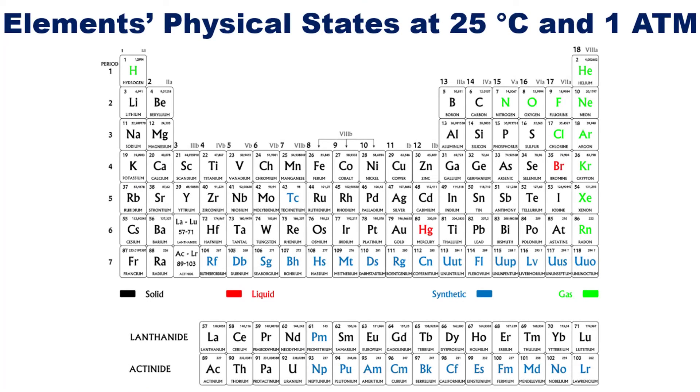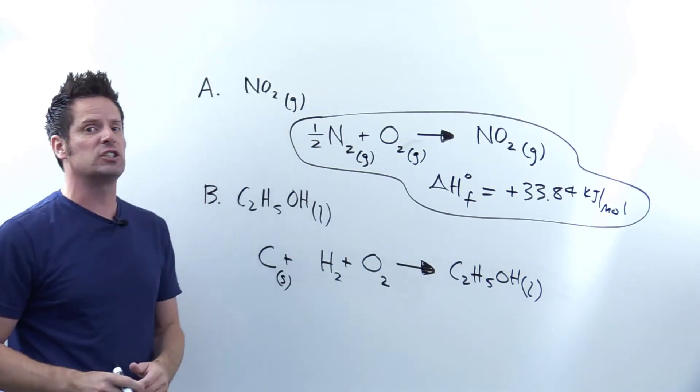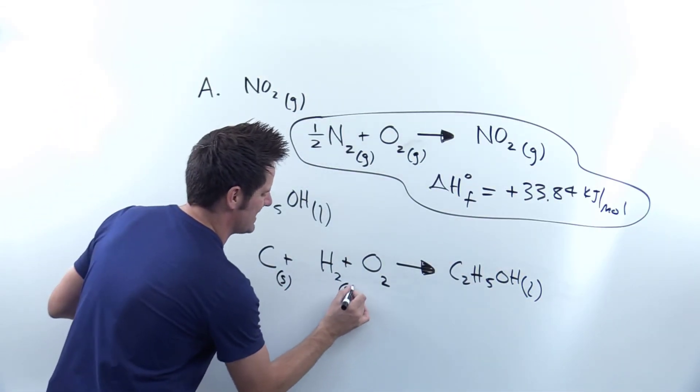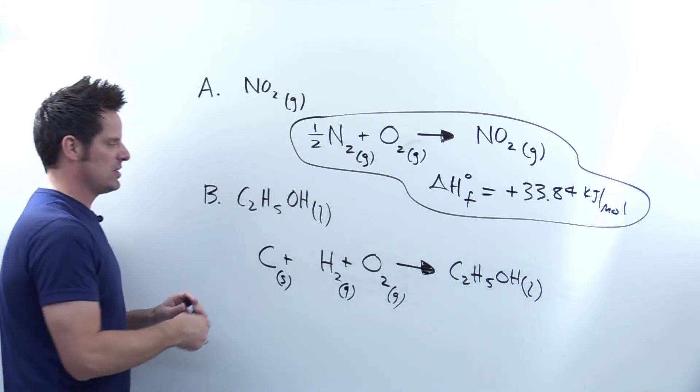Now I have to write down what physical state these exist in at basically room temperature, 25 degrees Celsius, one atmosphere pressure. Is carbon a solid, liquid, or gas as seen on this table in its elemental state? Yeah, it's a solid, so I'll write that down. How about hydrogen and oxygen? Well, as we just learned, they are gases, so I'll write down gases next to these. Now we're done with step two.